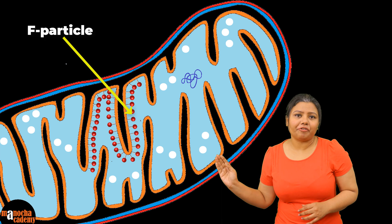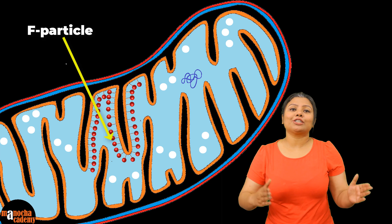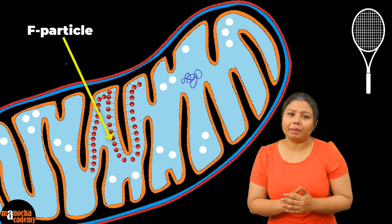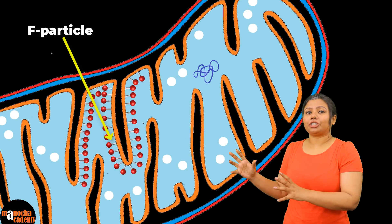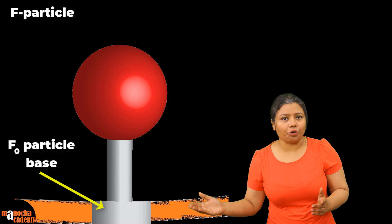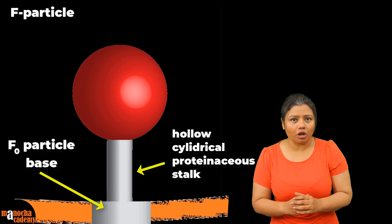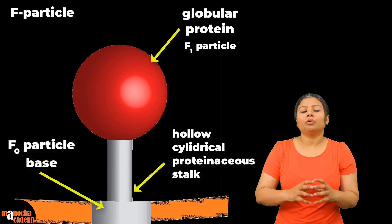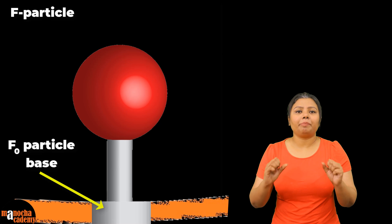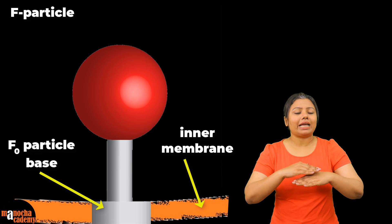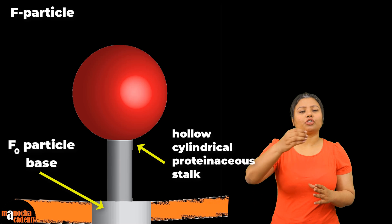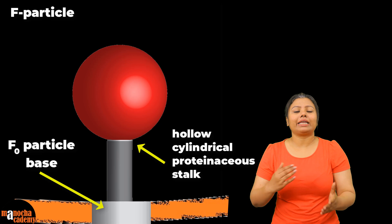The F particles, or the elementary particles, also known as the particles of Fernández-Morán, are tennis racket-shaped structures embedded in the inner membrane. They are made up of a base known as the F0 particle, a hollow cylindrical proteinaceous stalk, and a globular protein which forms the head, also known as the F1 particle. The F0 particle is the base with which the F particles remain attached to the inner membrane of the mitochondria. The hollow stalk is a path through which hydrogen ions can pass.